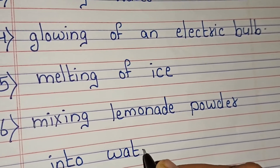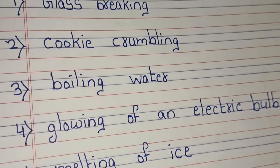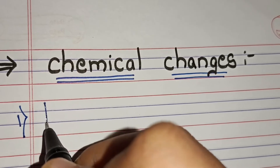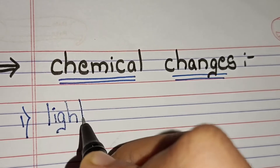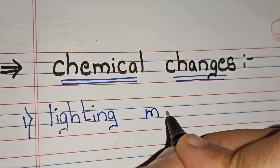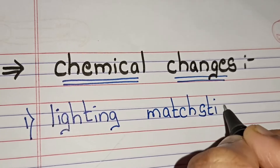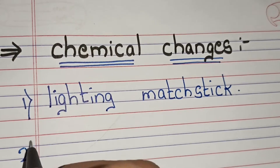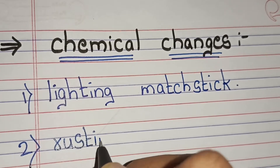These are the examples of physical changes. Now let's start chemical changes. Example first: lighting a matchstick. Second: rusting of iron.